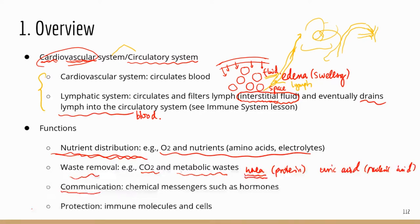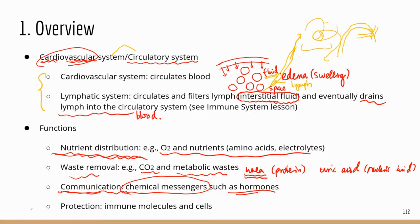The next function is communication. Blood is the highway system of your body — it can reach pretty much every part of your body, making it a perfect delivery system for long-distance communication. For example, your thyroid gland secretes thyroid hormone to regulate metabolism throughout the body. Those hormones are transported through the blood to their target cells and tissues, which could be really far from the original gland.